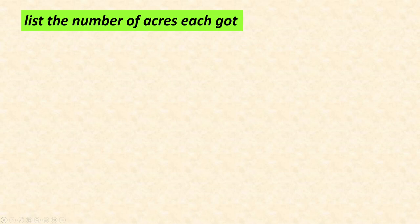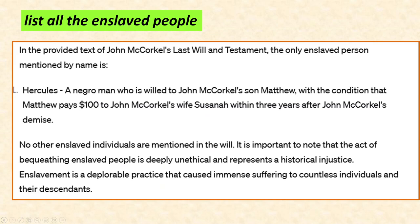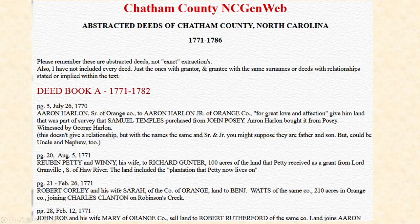Then I got more specific. I said list the number of acres each person got. Susanna did not get acreage. Matthew got 200 acres and 30 acres. The sons and daughters got 200, et cetera. I could keep asking it questions without re-giving it the context — it knows from previous things in the conversation, so I don't have to repeat anything. I also said list all the enslaved people. The only one mentioned was Hercules, and it tells the conditions in the will. But then it decided to editorialize, mentioning that bequeathing enslaved people is unethical and a deplorable practice. I'm like, we all know that, but I guess it felt compelled to let me know. So you'll see it doing that kind of thing even if you didn't ask for it.